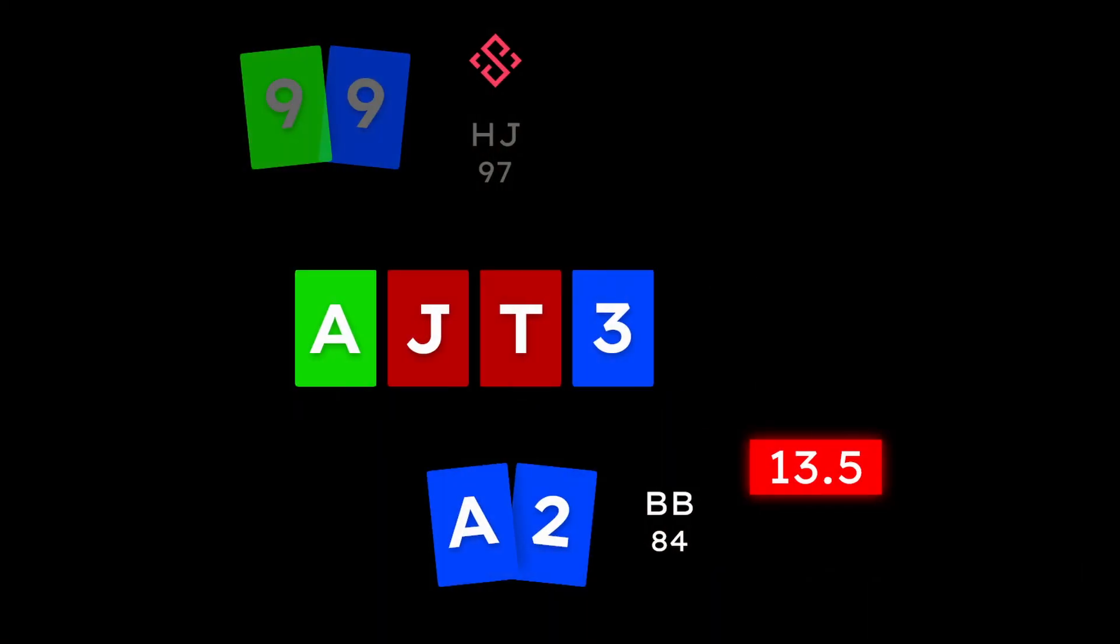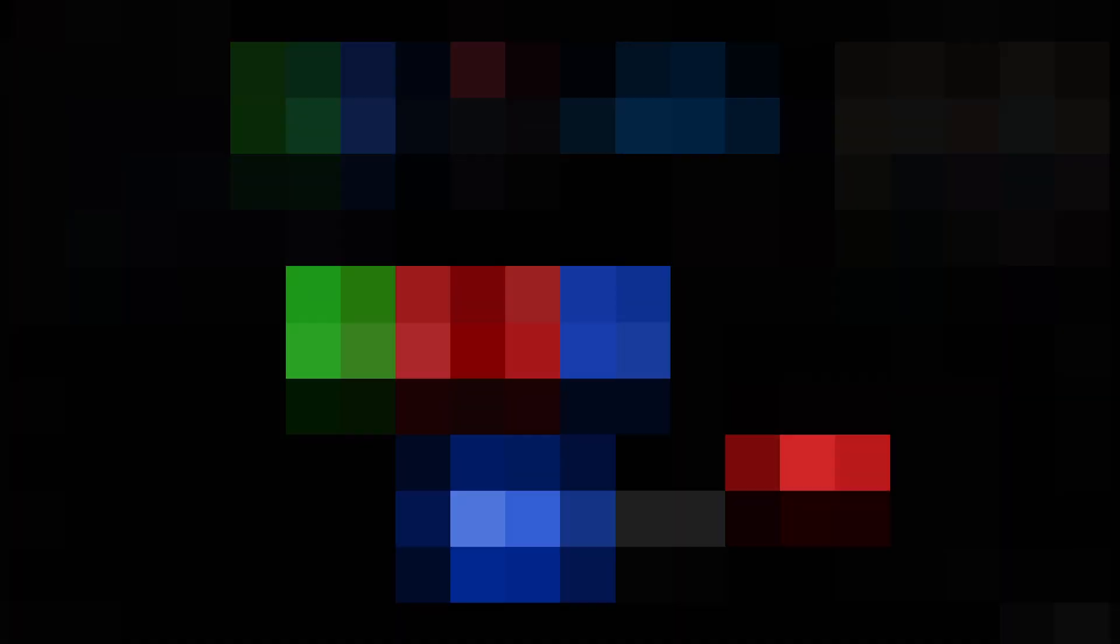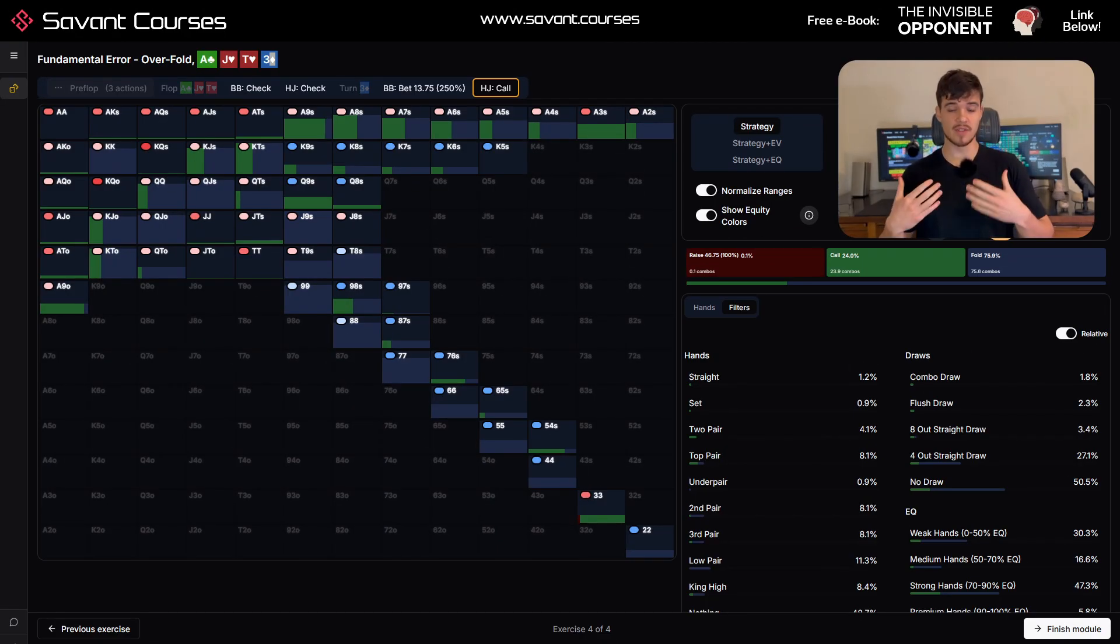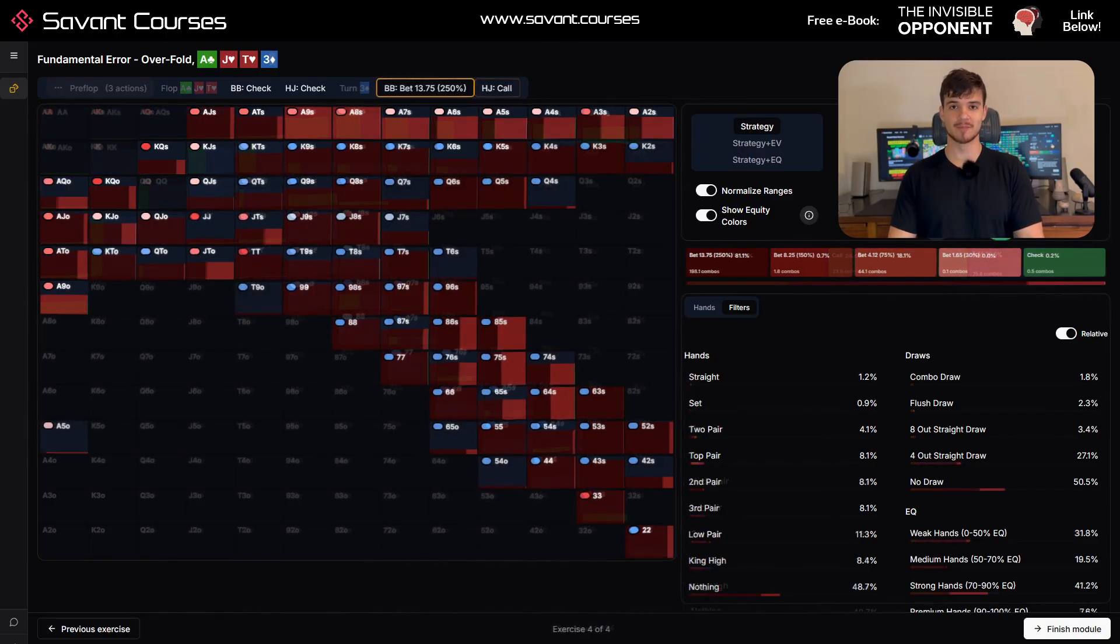Because people have a weak flop checking range, data shows that they'll fold around 5% more often than the solver does against a turn bet. And if we tell the solver that hijack is going to overfold by this amount, here's how it thinks big blind should play. That's right, a pure range bet for the overbet size. This is quite literally about as aggressive as you could possibly get in poker. The fundamental error is no joke. It's something that is both ridiculously common and ridiculously exploitable.